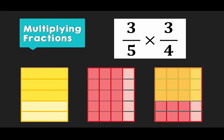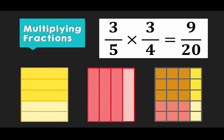We can see that the overlapping area, the orange part, covers 9 squares, and our total area of our rectangle has been divided into 20 equal parts. So that means that our 3 fifths multiplied by 3 quarters gives us 9 out of 20.